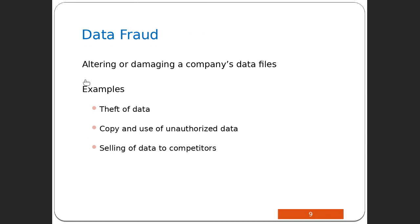The next category is data fraud, which involves altering or damaging a company's data files. Someone with access, or who gains unauthorized access, could steal company data, business secrets, or secret formulas. They could copy and use unauthorized data, or sell the data to competitors. This could be someone inside the company with access, or someone accessing the company database from outside — in either case, it is data fraud.